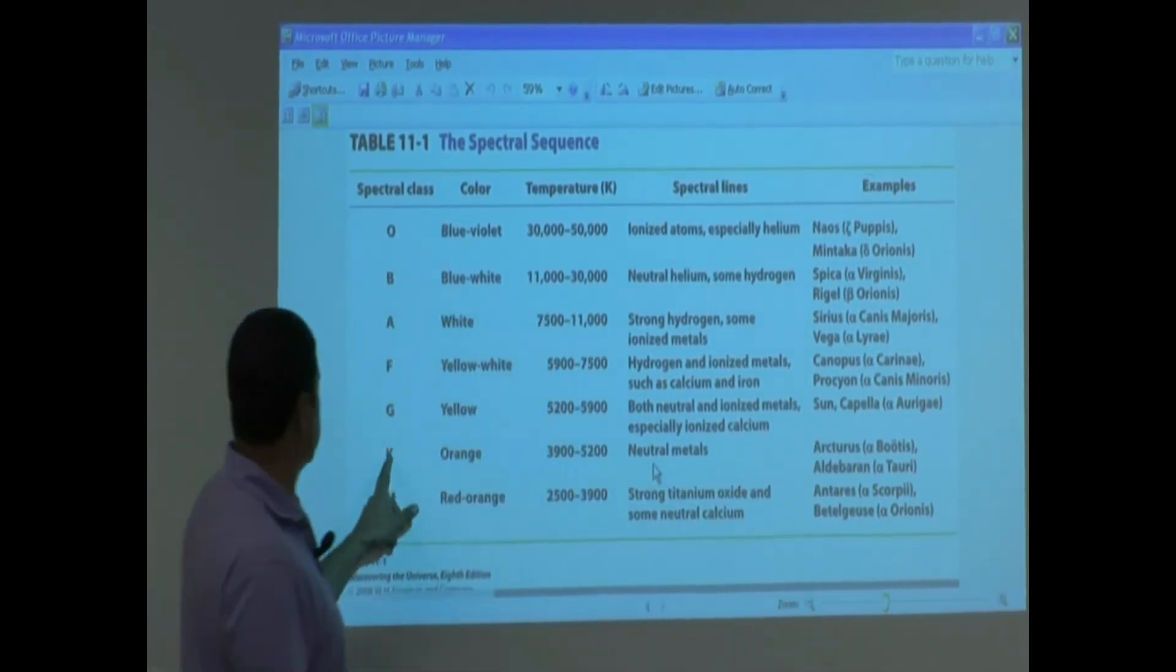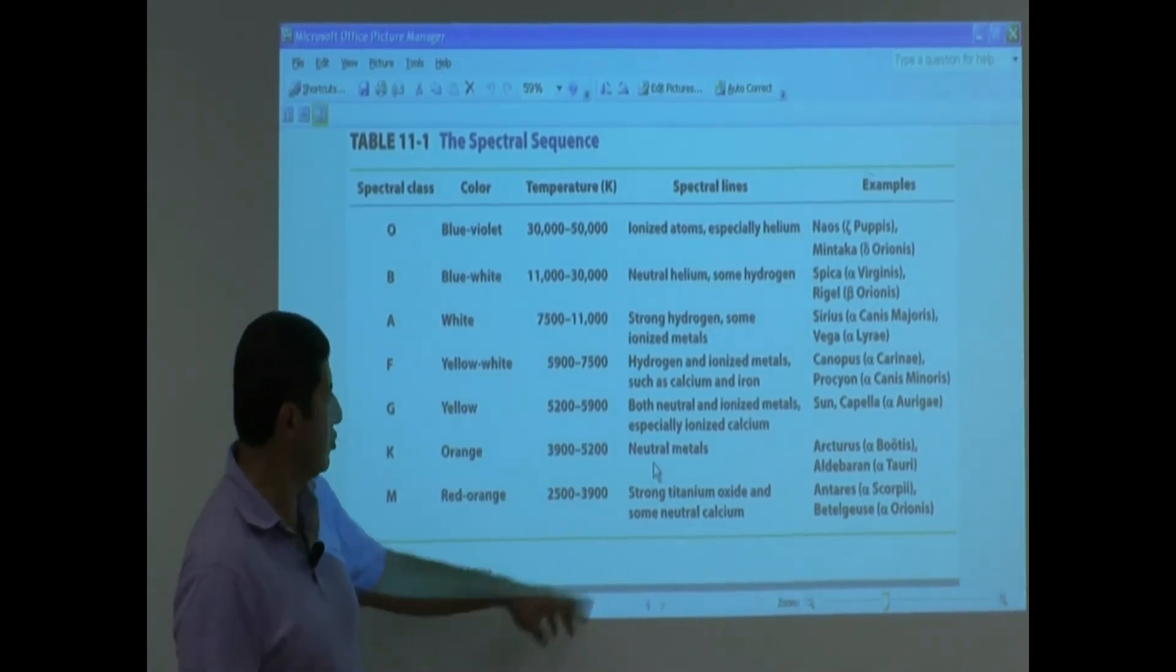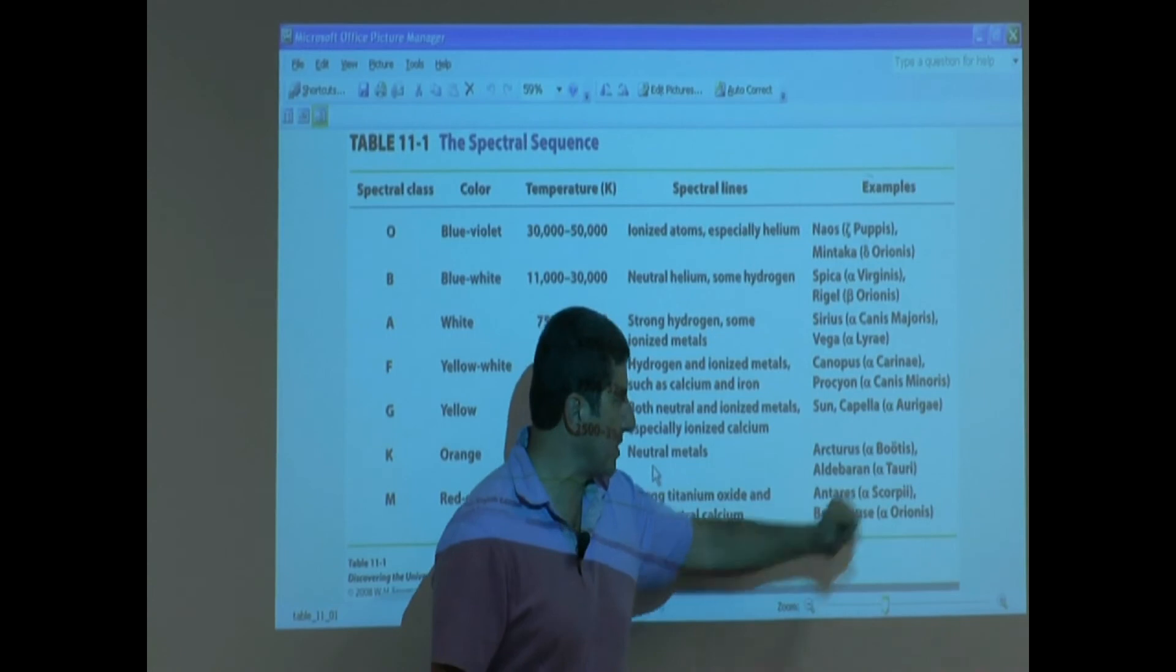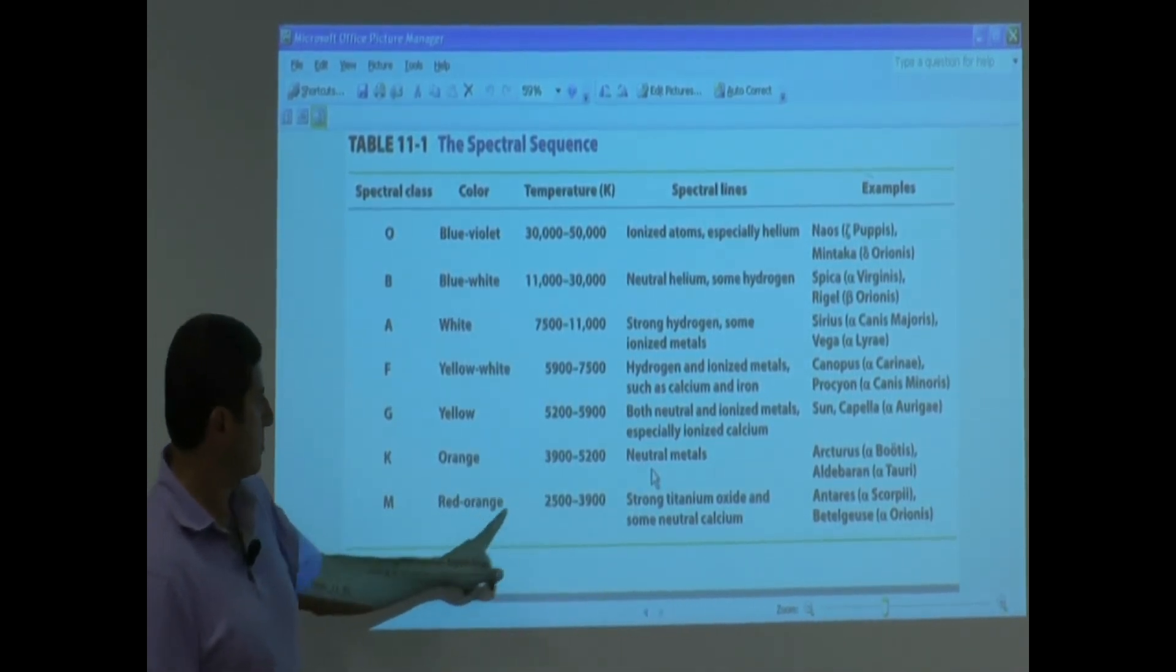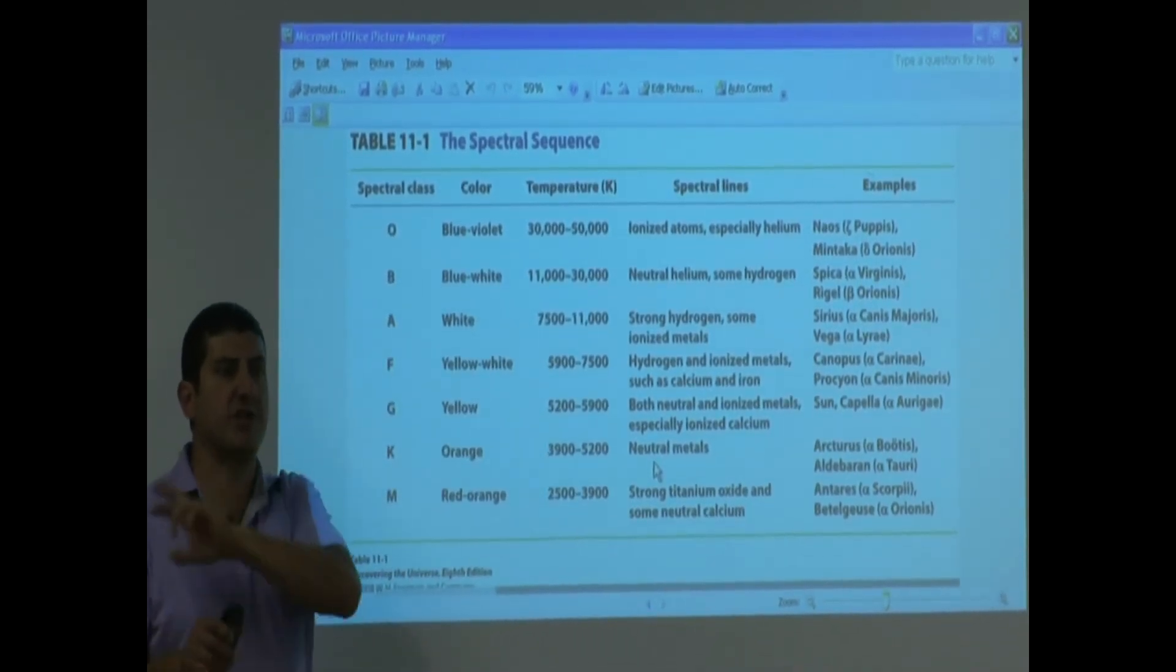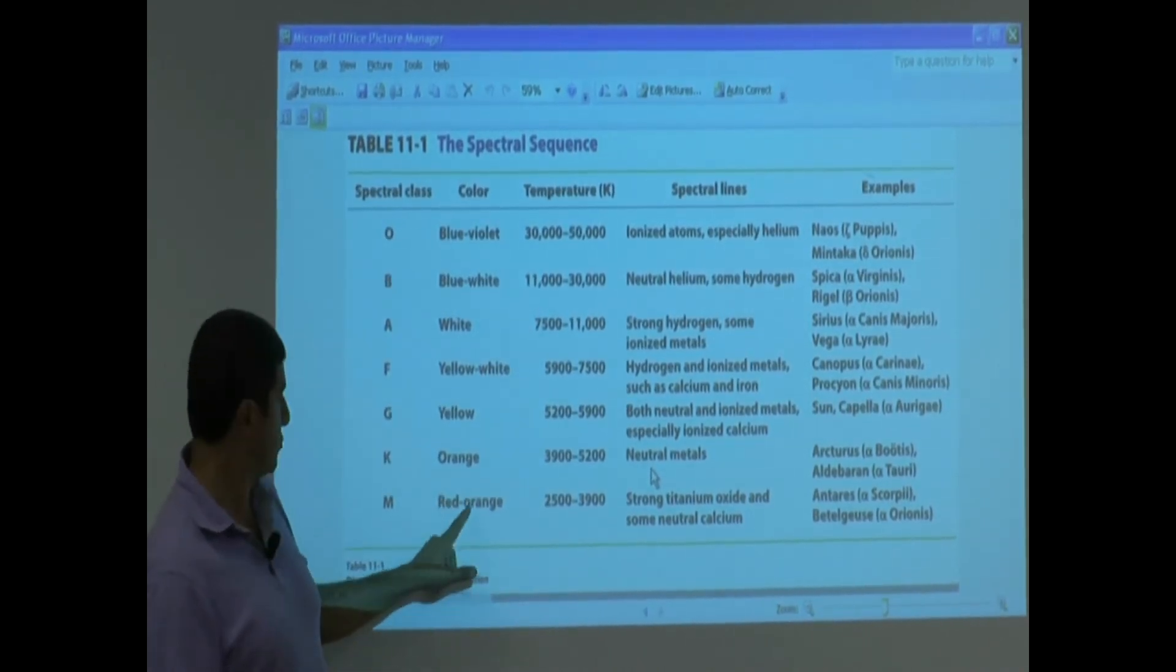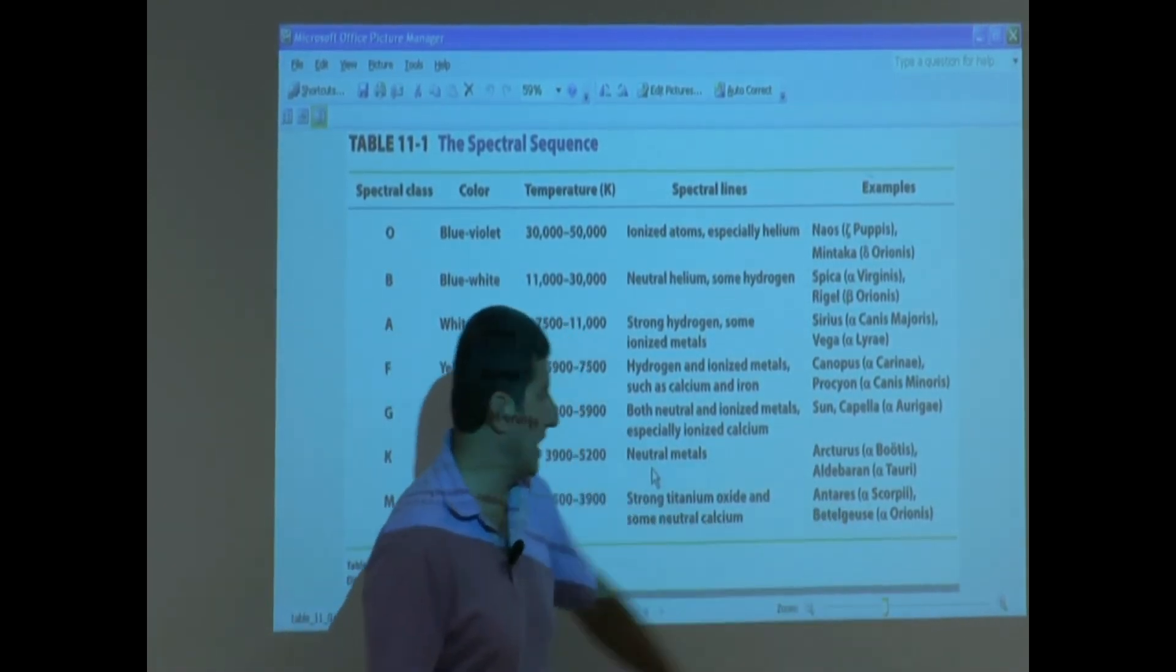And then K is orange. 3,900 to 5,200, neutral metal lines. Examples of them, Arcturus, Aldebaran. First brightest star in the constellation Bootes. First brightest star in the constellation Taurus. And then M, red orange. 2,500 to 3,900. So basically, this is kind of matching everything we've learned up to now. You see the temperature scale? And it's also matching the colors that we've learned. Roy G. Biv. You see? Red, orange, yellow, blue, indigo, violet. And the names here.